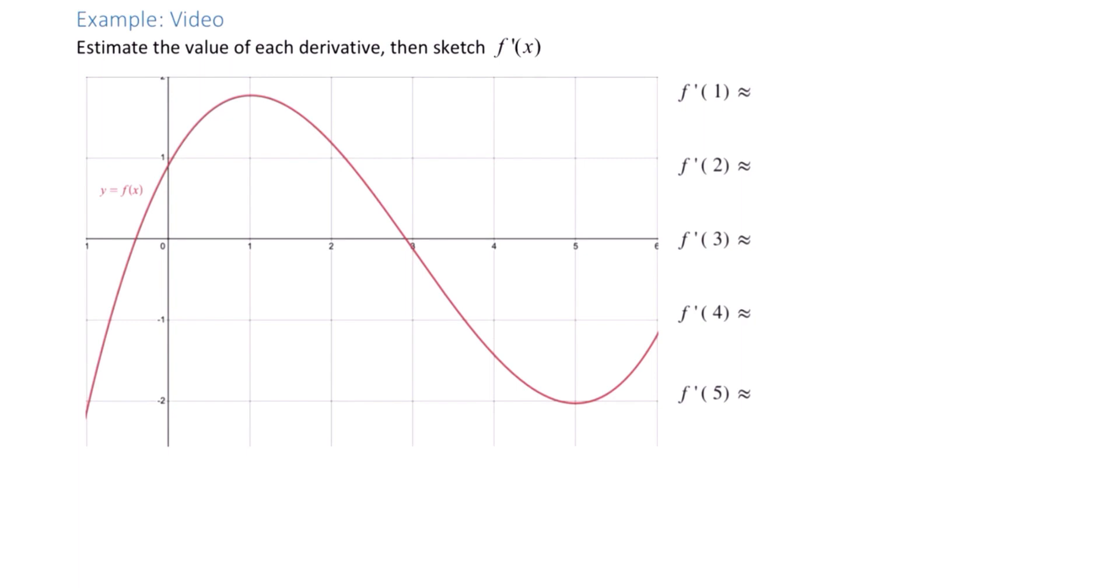So f'(1), we're looking for an x value of 1, and we're focusing on the slope of that tangent line. That one's pretty easy. That looks like a horizontal tangent line. Let's say its slope is 0.